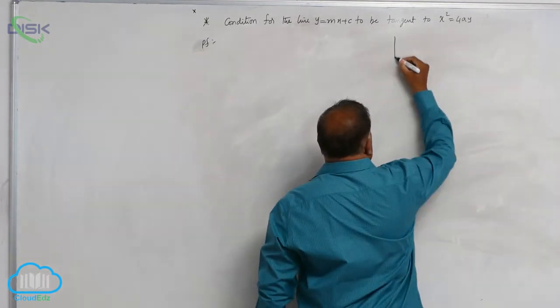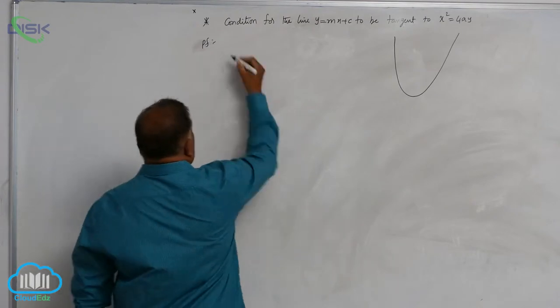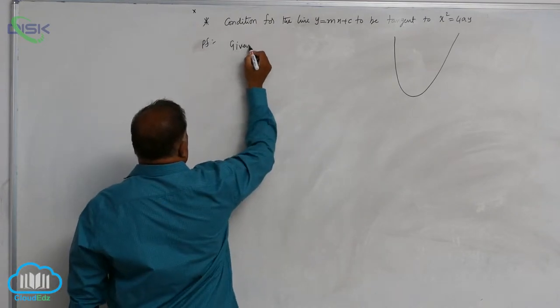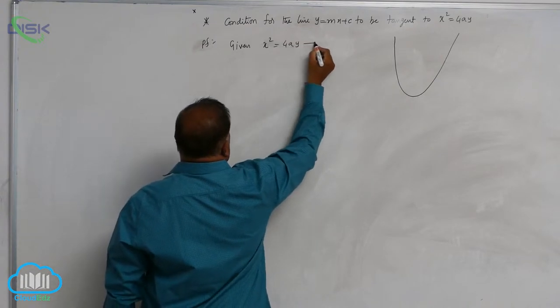Now you can see, as you know that x square equal to 4ay is an upward parabola. First write down, given parabola is x square is equal to 4ay, equation 1.